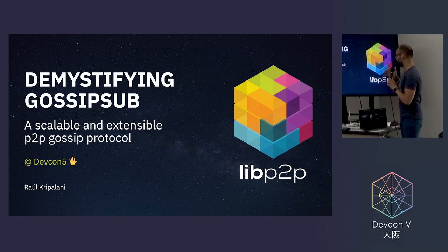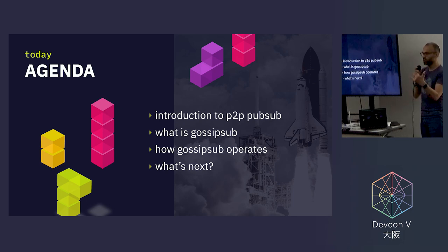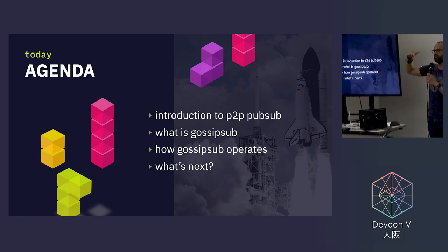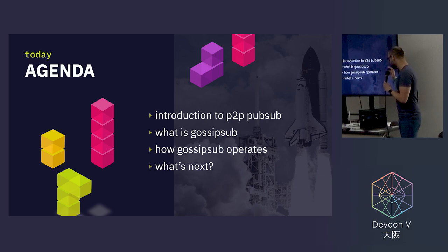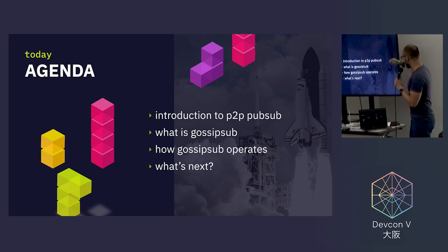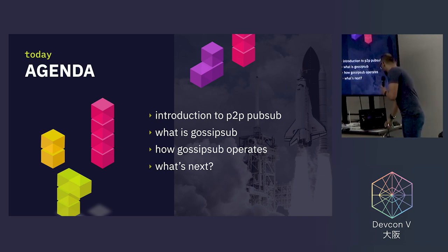GossipSub is a scalable and extensible peer-to-peer gossip protocol. Our agenda for today: first, I want to make sure we all have a common baseline to talk about these technical concepts, so I'm going to do a very quick introduction to peer-to-peer GossipSub. Then we're going to talk about what GossipSub is, how it operates, and what's up next — because GossipSub is a stepping stone in a roadmap that includes a lot more functionality coming in the future.